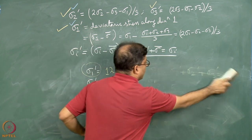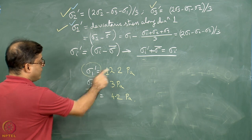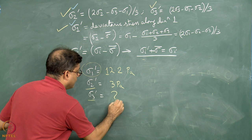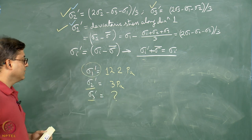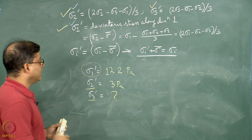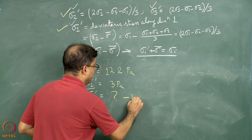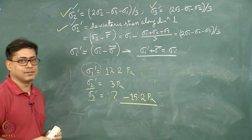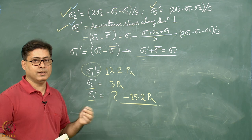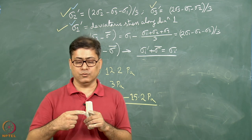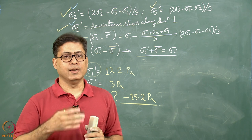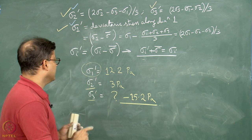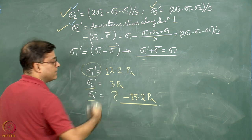So I will reframe the problem: if sigma-1 prime and sigma-2 prime are given, how much is sigma-3 prime? Since their sum has to be 0, sigma-3 prime is simply the negative of the sum of the other two. If such a problem comes it should take only a few seconds. The deviatoric stresses in two perpendicular directions are given — find the deviatoric stress in the third perpendicular direction — and the answer is: sum the two and change the sign.